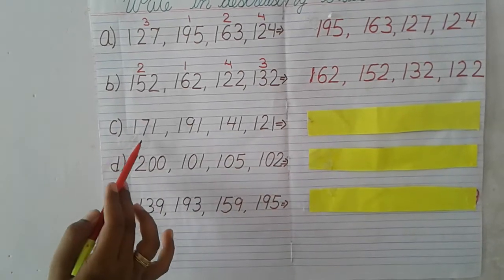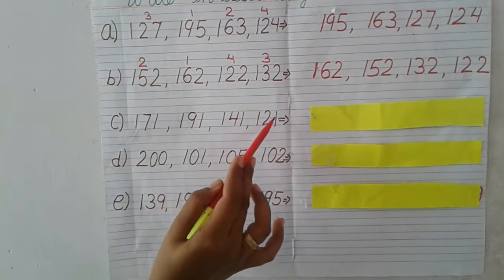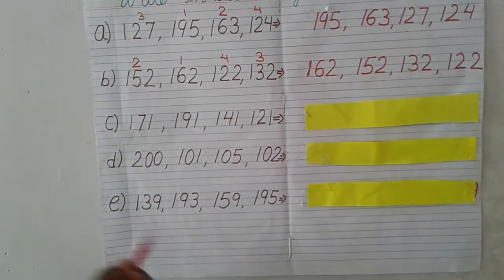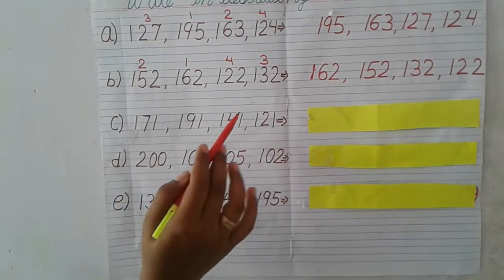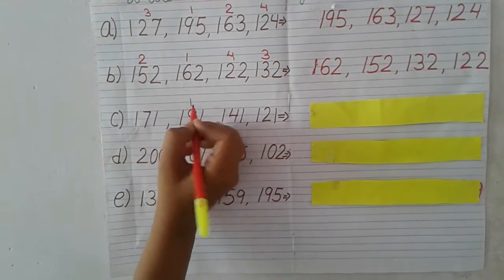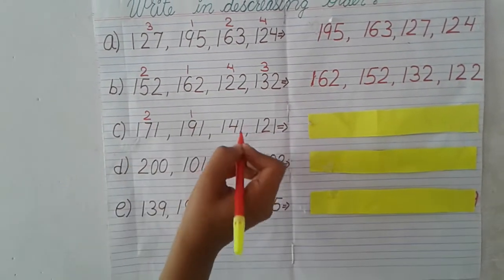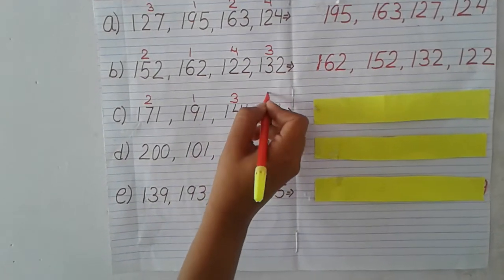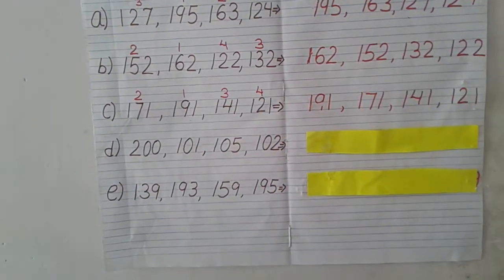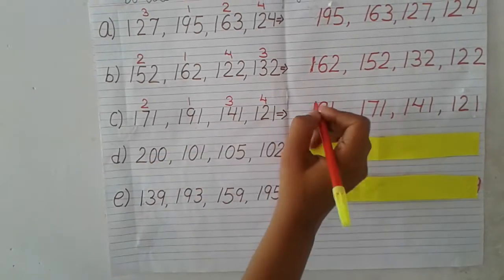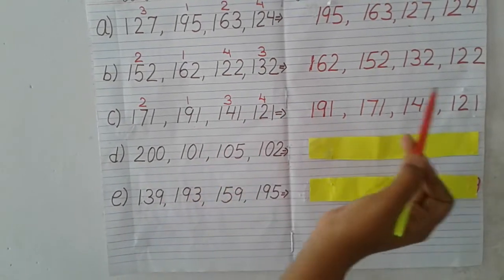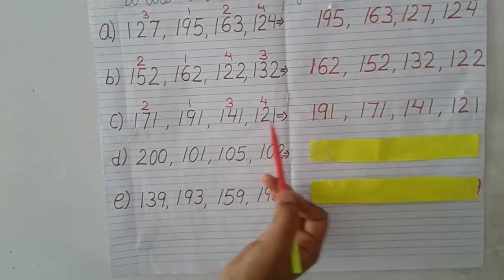Now question C: 171, 191, 141, 121. The hundreds place is all 1. Tens place: 7, 9, 4, 1. Which is the biggest? 9, so 191 is first. Then 7, so 171 is second. Then 4, so 141 is third. The smallest is 121. The answer is: 191, 171, 141, 121.